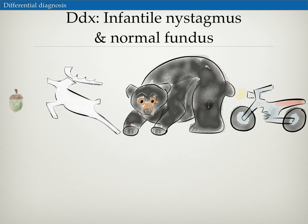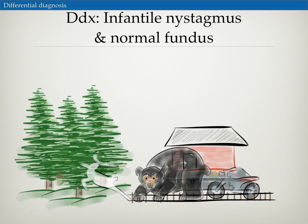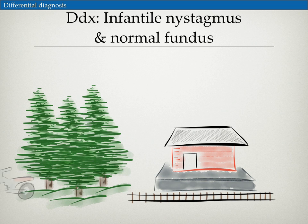As these four are running through, they encounter two other symbols. The first is a train station, which is representative of congenital stationary night blindness, and then an alpine forest — which for me represents albinism.